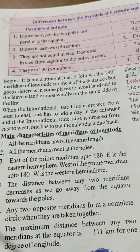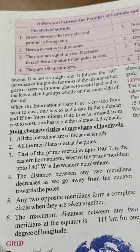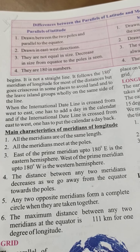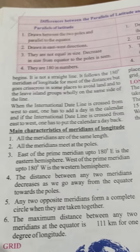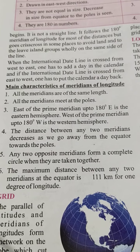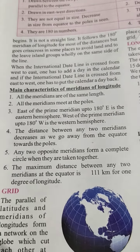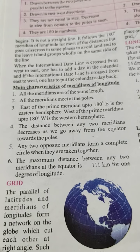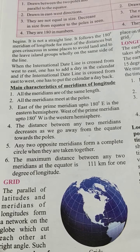Main characteristics of meridians of longitude: 1. All the meridians are of the same length. 2. All the meridians meet at the poles. 3. East of the prime meridian up to 180 degrees east is the eastern hemisphere. 4. West of the prime meridian up to 180 degrees west is the western hemisphere. The distance between any two meridians decreases as we go away from the equator towards the poles. 5. Any two opposite meridians form a complete circle when taken together. 6. The maximum distance between any two meridians at the equator is 111 km for one degree of longitude.